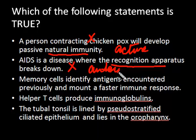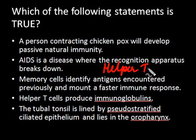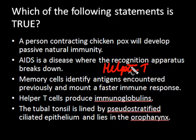Autoimmune diseases like multiple sclerosis, Graves' disease, lupus, and so on. AIDS is a disease where the immune system is compromised because the helper T cells, also known as CD4 cells, are the most important cells in the immune system and these cells are destroyed. It's not as if the recognition apparatus breaks down.